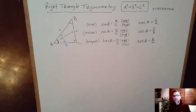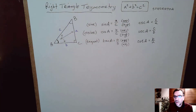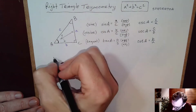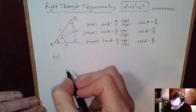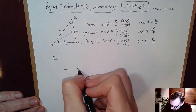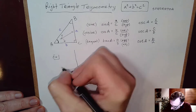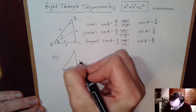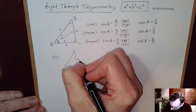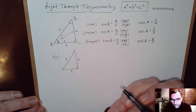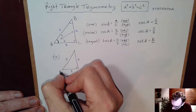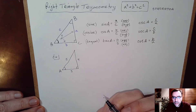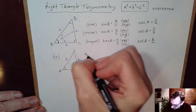So those are the six possible fractions you can get by looking at ratios of sides of a right triangle. Now let's do an example. Let's consider our famous 3-4-5 right triangle. We have sides 3, 4, and 5, and we're going to consider angle A and find all six trig ratios.